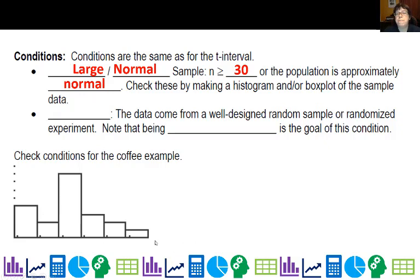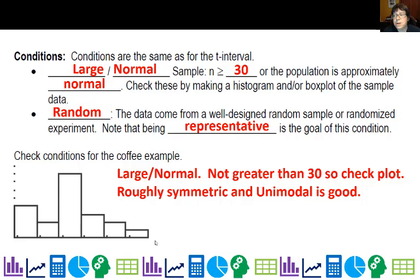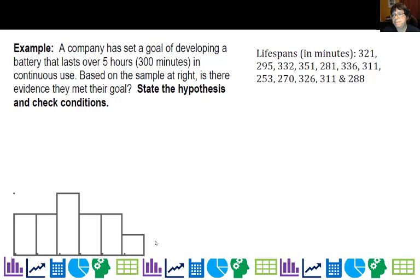Random: the data come from a well-designed random sample or randomized experiment. Note that being representative is the goal. So for our coffee example, it's not greater than 30, so we have to check the plot. And it's roughly symmetric, it's unimodal, and again, no major skew, no outliers, so we're fine. Random: well, we told you in the problem that we had randomly selected, so we're fine there.